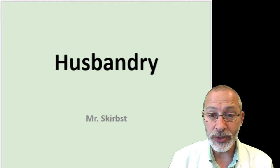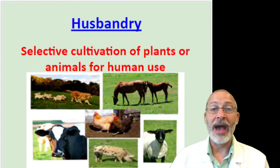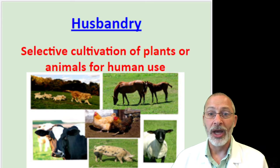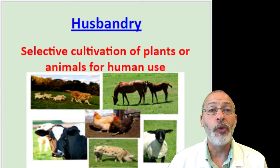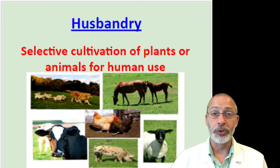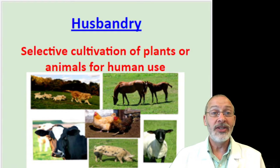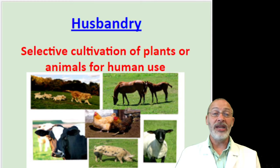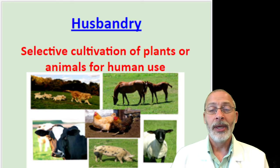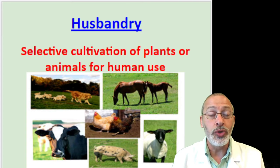Husbandry is about the selective cultivation of plants or animals for human use. All of us, whether we have an agricultural background or not, like to eat. We all need to eat food. Some of you might be meat eaters, some of you might not be — and you still have to eat plants or derivatives from those products. We have to eat in order to stay alive.